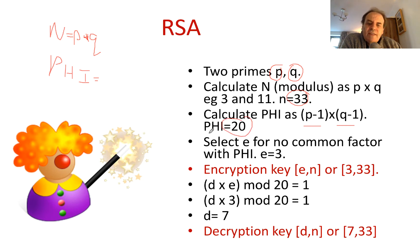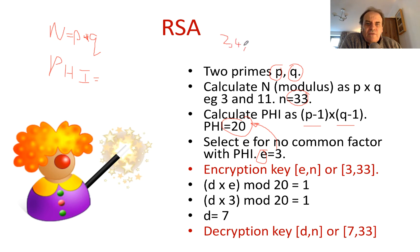Next we find a value of E, the encryption key, that has no shared factors with Phi. Because the factors of Phi — 20 — include 2, 4, 5, and so on, we can't pick those values. We could pick 3 or 7. Let's pick 3. So E equals 3, and our encryption key becomes E and N, which is 3 and 33.